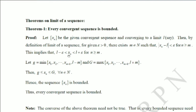So for n starting from m, xm is greater than l minus epsilon and less than l plus epsilon — so l minus epsilon is the lower bound and l plus epsilon is the upper bound for xm. The same holds for xm+1, and continuing to infinity. For all sequence terms from xm onward, l minus epsilon is the lower bound and l plus epsilon is the upper bound — all those terms are bounded.